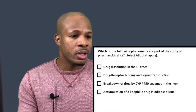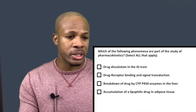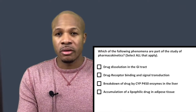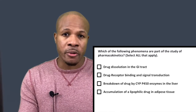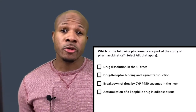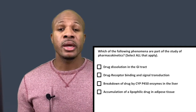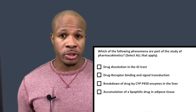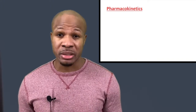Let's answer question number one. Question number one states: which of the following phenomena are part of the study of pharmacokinetics? Select all that apply. This question is straightforward, but in order to get it right, you need to know what pharmacokinetics is. Pharmacokinetics is the study of what the body does to the drug.